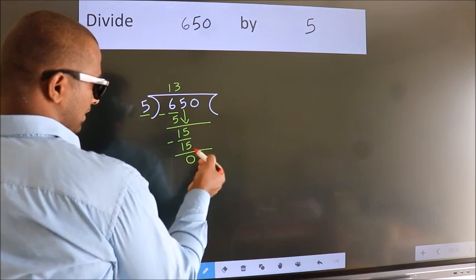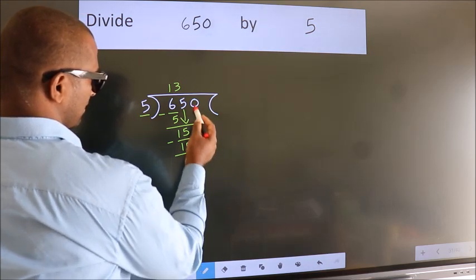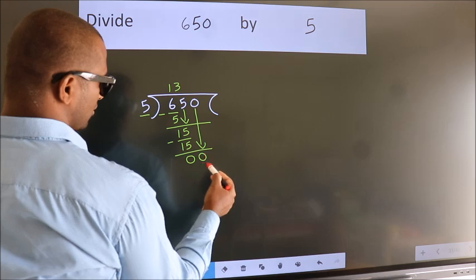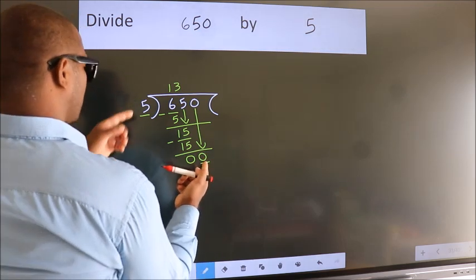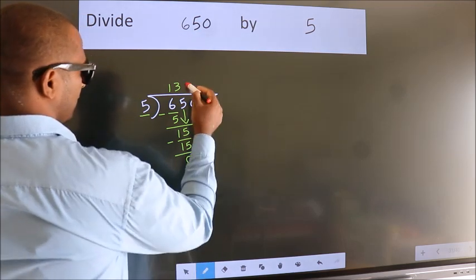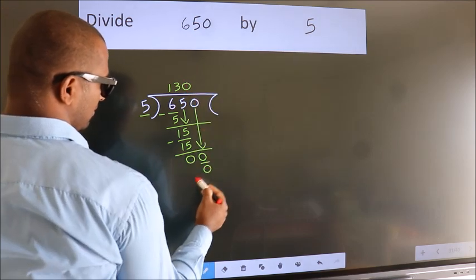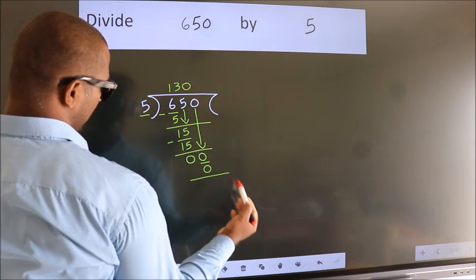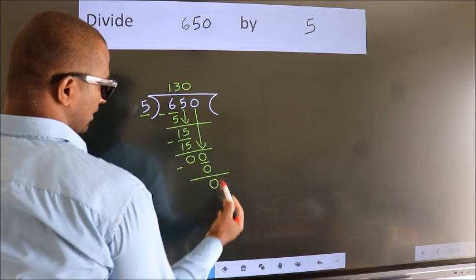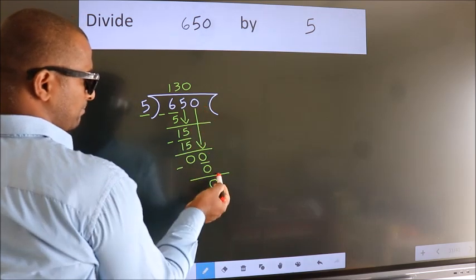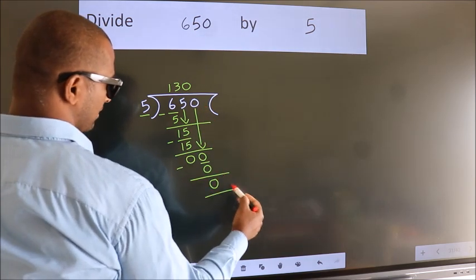After this, bring down the beside number, so 0 comes down, giving us 0. When do we get 0 in the 5 table? 5 times 0 is 0. Now we subtract and we get 0. No more numbers to bring down, so we stop here.